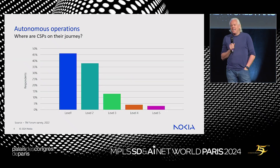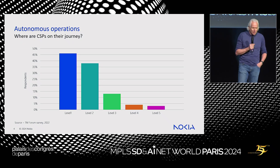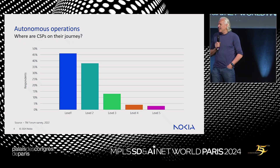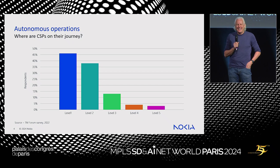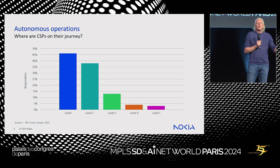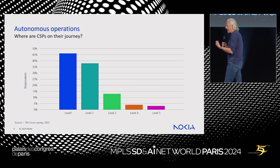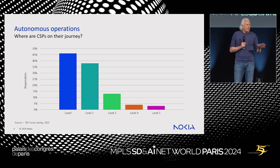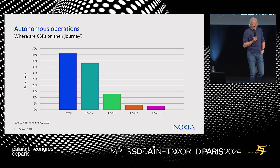Looking at the state of affairs that was gathered, most operators are actually in the level one and level two category, which I was expecting. Interestingly, there are some people at level five — I'd love to talk to them to see how they do that. I'm not sure we have to fully get there, but we have to think of a mode where more and more machines help us drive and operate the network, so we can sit back and have machines do the job for us.